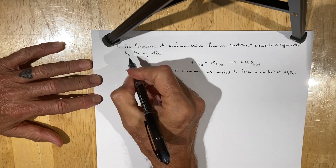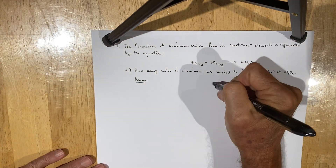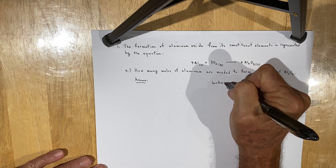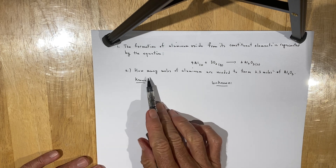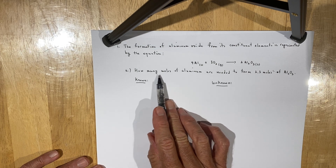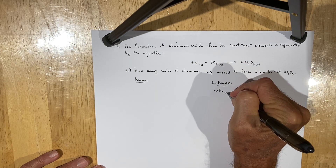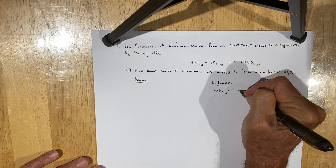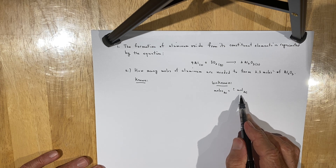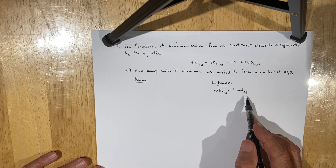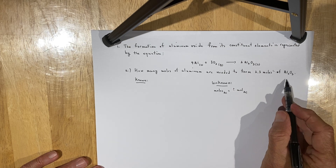As you set out to solve this, just as with any other problem, I require you to use the known-unknown solution style of problem solving. The first thing you're asked to determine is how many moles of aluminum — which goes in the unknown — and it should be stated that moles of aluminum are expressed in units of mol of aluminum.